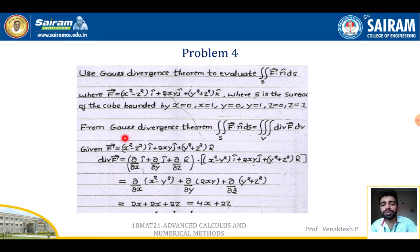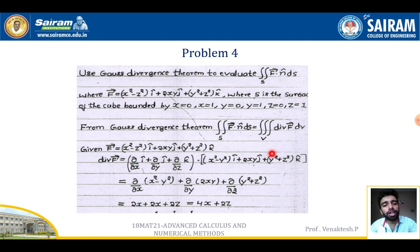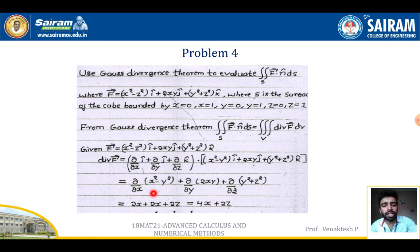Computing div F: ∂/∂x(x²−z²) + ∂/∂y(2xy) + ∂/∂z(y²+z²) = 2x + 2x + 2z. Wait — correcting: ∂/∂x(x²−z²) = 2x, ∂/∂y(2xy) = 2x, ∂/∂z(y²+z²) = 2z. So div F = 2x + 2x + 2z = 4x + 2z.